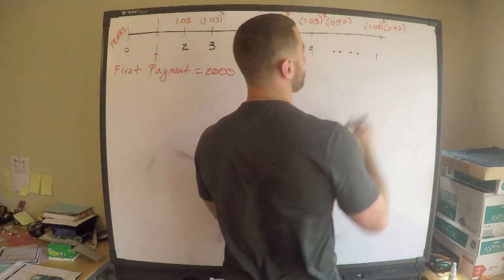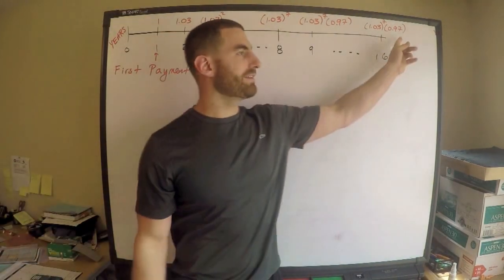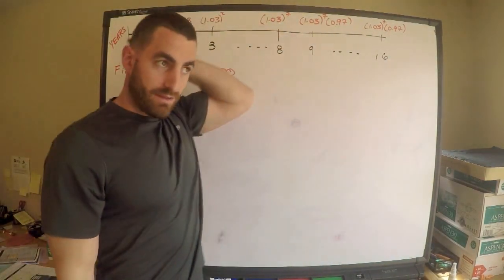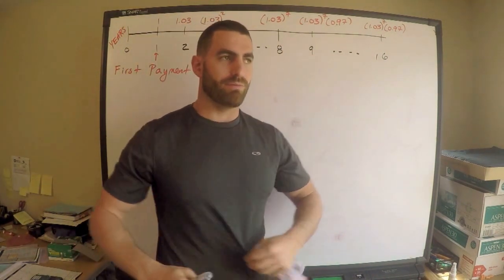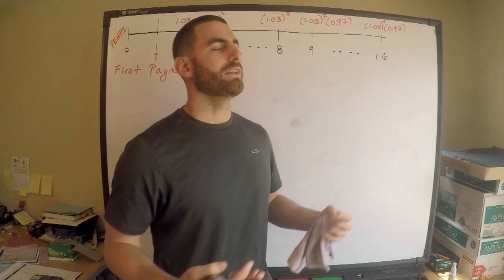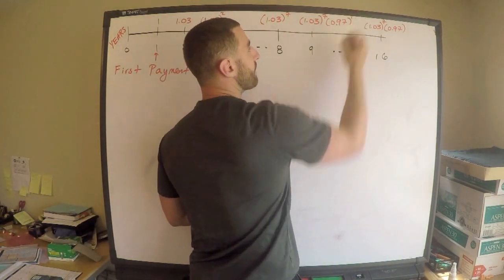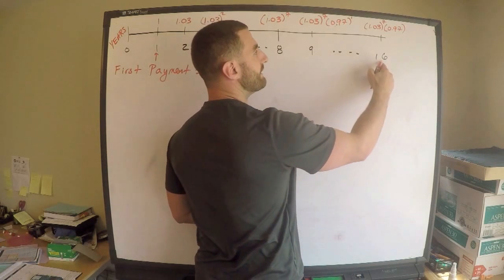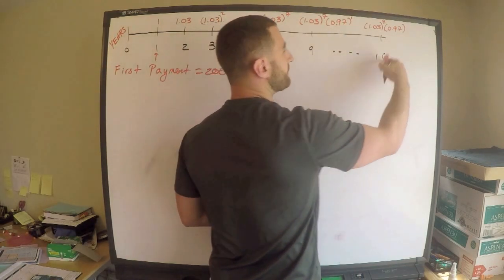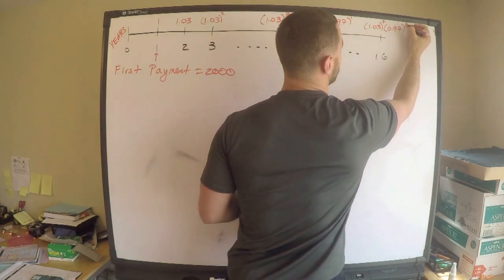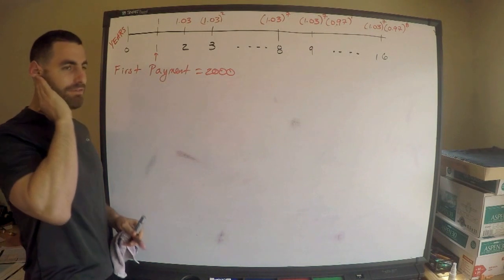I haven't put a power on the 0.97 yet — what is the power? A lot of this comes down to annoying counting arguments. Payment 9 corresponds to the power of 1. If I go to payment 16, that's 16 minus 8 equals 8. So the power on 0.97 for payment 16 is 8. That gives me all of my 16 payments.